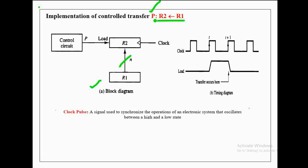The control variable p is activated by the control circuit. The control variable p is connected to the load input signal of R2, so whenever p is activated, the load input signal of R2 is also activated. A clock pulse is applied to R2 to synchronize the load micro operation, which is the micro operation taking place in R2 according to this RTL statement.